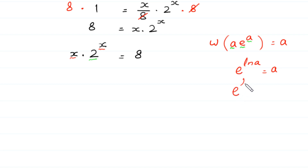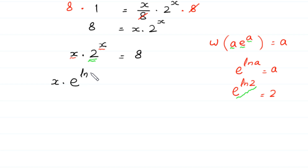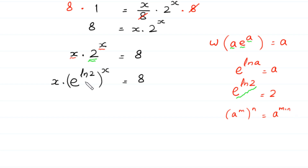According to this property, e^(ln 2) = 2, so we replace this 2 with e^(ln 2). Then (e^(ln 2))^x becomes e^(x · ln 2) using the exponent rule (a^m)^n = a^(m·n). So we have x times e^(x · ln 2) is equal to 8.